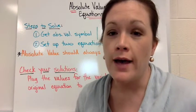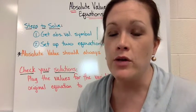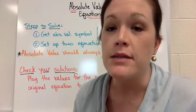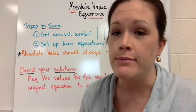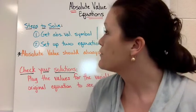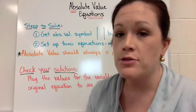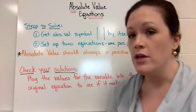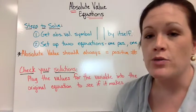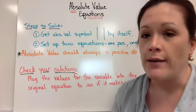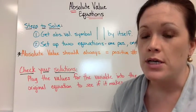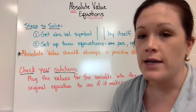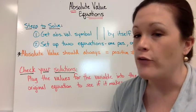Let's talk about how you solve absolute value equations. There are just a couple of steps, and then we'll look at some examples. The first step is to get the absolute value symbol by itself. If you've got things around it, you want to move those away from the absolute value symbol to get it on one side of the equal sign all by itself.